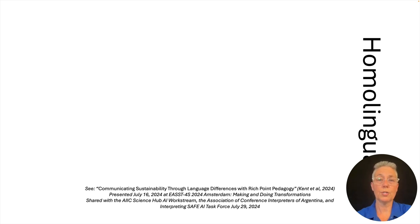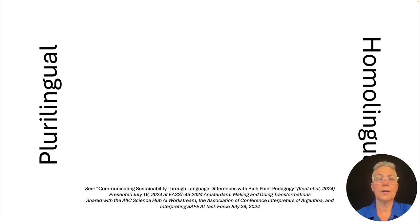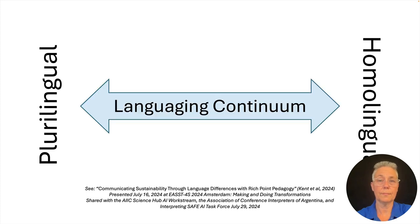The concept of homolingual represents one pole of a continuum with plurilingualism on the other pole. Now showing on the left side of the slide, also in a vertical text box, is the word plurilingual. The extreme case of plurilingualism is interpreted interaction, when someone in the role of an interpreter intermediates among speakers or signers of different languages. These two terms inscribe the field of interaction from similarity to diversity in the languages used during communication. Now a double-sided wide arrow appears between the two poles of plurilingual and homolingual, with the label languaging continuum inside of it.